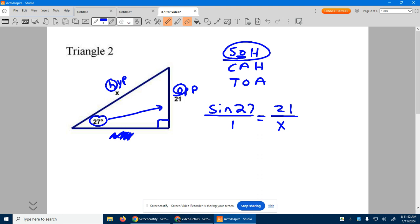This is why I always like to set this up as a proportion, because if you had just 21 over X equals sine of 27, you might get confused. But here you're like, oh, two fractions equal means extremes property.